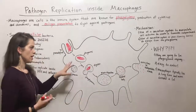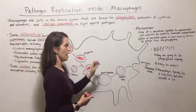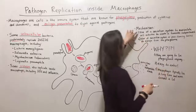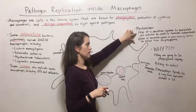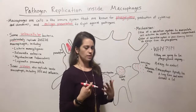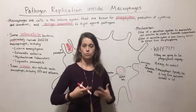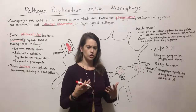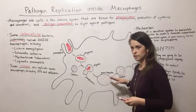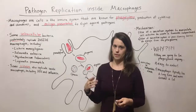Now let's talk about the mechanisms. How are they replicating inside a macrophage? There are a few different possibilities. One is the use of a secretion system to manipulate cell activities to create a favorable compartment. That means using gene products — some proteins that they can make — to manipulate cell activities and alter this process to create a favorable environment to replicate in.